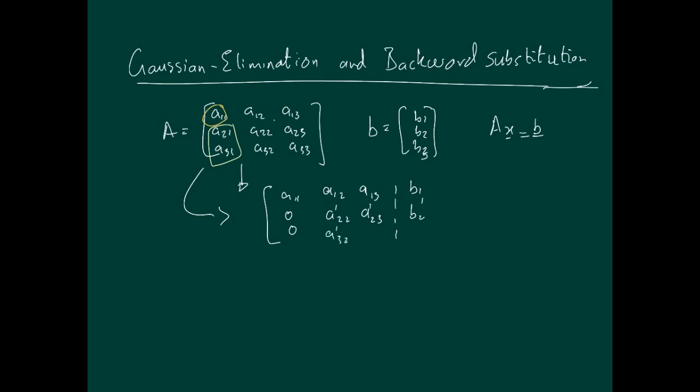That's b2, and here you'll have the a32, I put a dash on it, and a33. This is not derivative, this is just indicating that it's a different number than the above one. So then what you'll do is you'll use this here as a pivot element and then reduce it further.